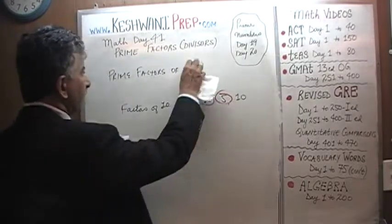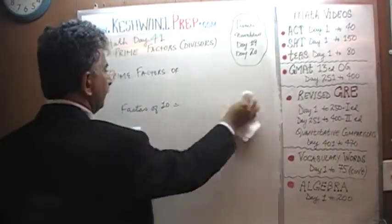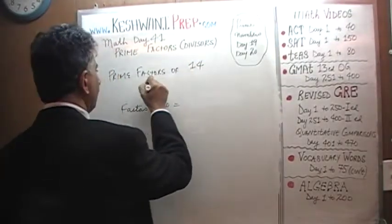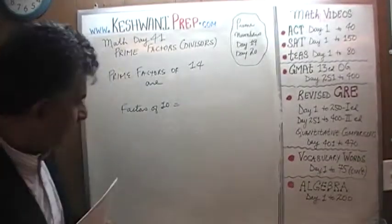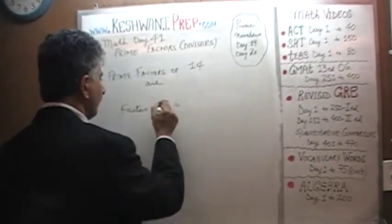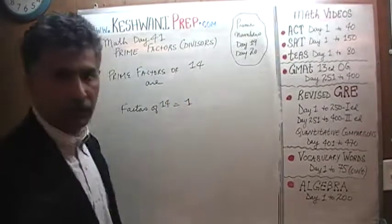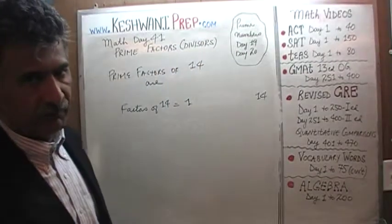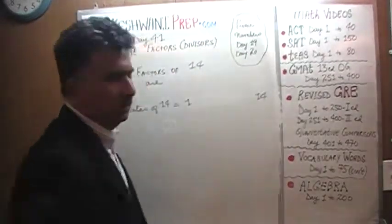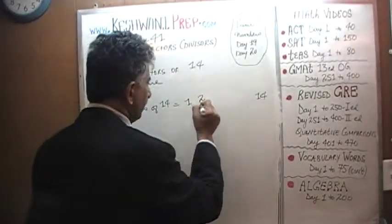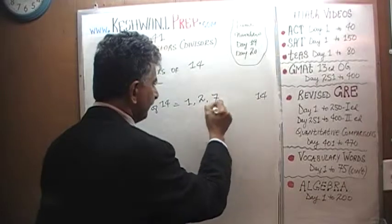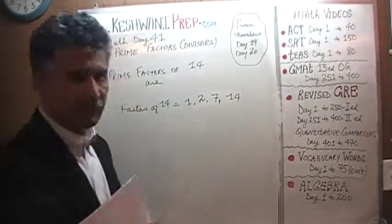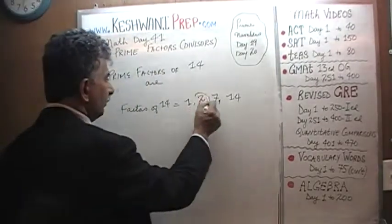How about 14? Prime factors of 14. The factors of 14 are 1, 2, 7, and 14. Neither 1 nor 14 count as prime factors because they are not prime numbers. 14 can be evenly divided by 2 and by 7 — and that's it. So 14 has 4 factors, but out of those only 2 are prime: 2 and 7.